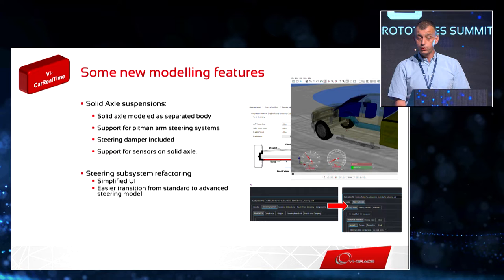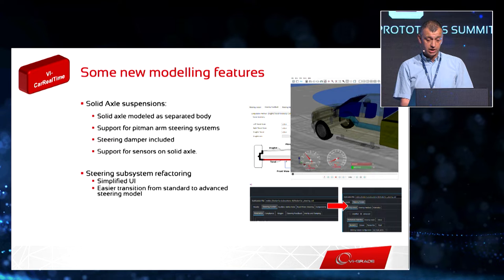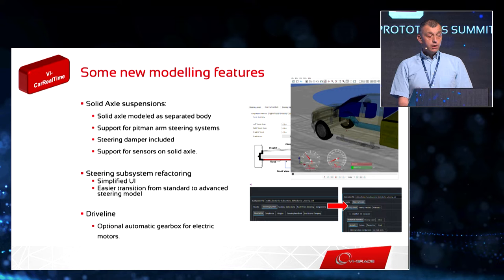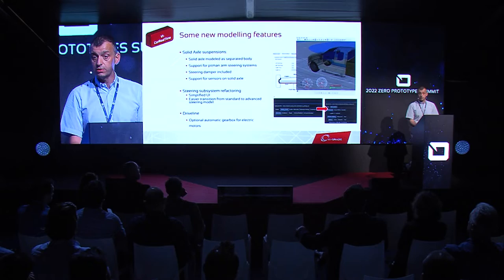We received feedback from customers over the years saying that adding functionality had made the steering UI a bit cumbersome. Now we've cleaned that up, making a clear separation between which parameters are needed for the different modeling stages. You can see from the picture how the new UI looks — much streamlined, fewer parameters, better organized. Finally, we've been working on the driveline: we now have a gearbox capability for all electric motors. VI CarRealTime can already offer up to seven electric motors distributed to realize different layouts, and now you can also have a gearbox for each of them.